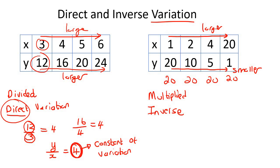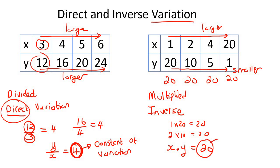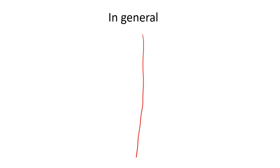For the inverse example, we kept multiplying them. We said 1 times 20 is 20, 2 times 10 is 20. So x multiplied by y equals 20 — once again, that would be your constant of variation. In general, when it is direct variation, you're going to get examples after this. Stick around.